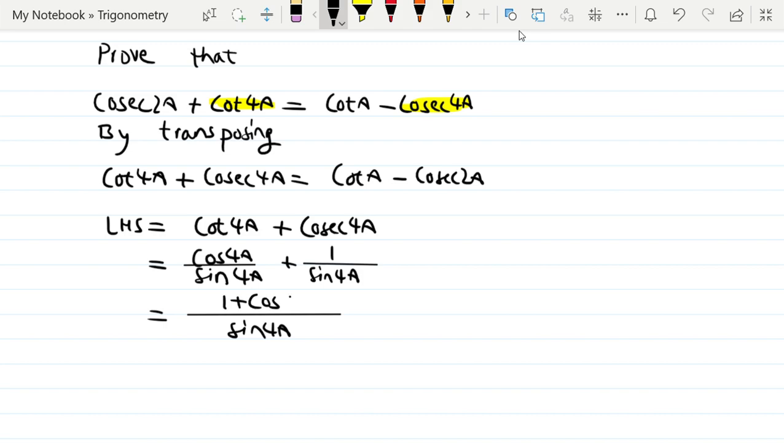Then 1 plus cos4A equals 2cos²2A. So 1 plus cos4A is equal to 2cos square 2A.